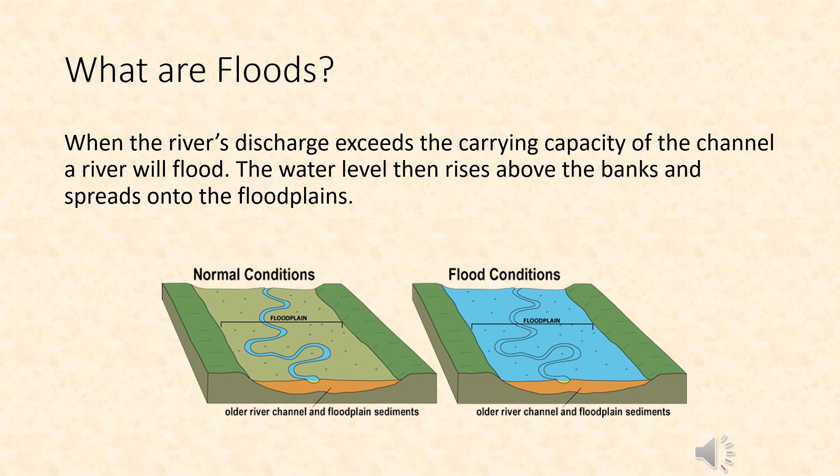The water level rises above the banks and spreads onto the floodplains. Even though this is a natural process, people can exacerbate the problem and make it much worse by many of the actions that they do.